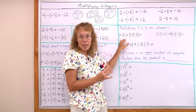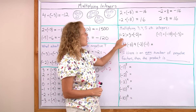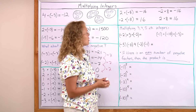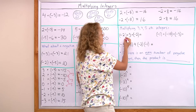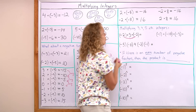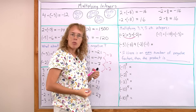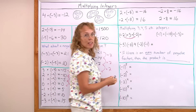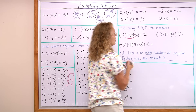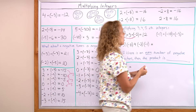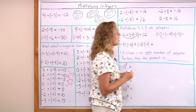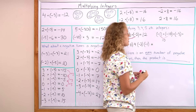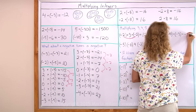Now let's look at what happens if we have many numbers to multiply. Like negative 2 times 3 times negative 2. You can multiply in any order, so let's multiply the 2 negatives first. Negative 2 times negative 2 gives a positive answer: 4. And then 4 times 3, so I get 12. Over here, I multiply 2 negatives first to get 10, and then 10 times negative 3 gives me negative 30.